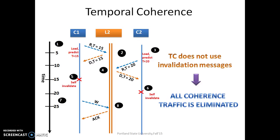This slide demonstrates how temporal coherence handles invalidation. C1 (cache 1) issues a load request to the L2 cache and predicts that the read-only epoch for this address will end at time t=15. The L2 receives C1's load request and epoch lifetime prediction, records it, and replies with the data and timestamp t=15. This timestamp indicates to C1 that it must self-invalidate this address in its private cache by t=15. When C2 issues a load request, it predicts the epoch to end at t=20. The L2 receives C2's request, checks the stored timestamp, extends it to t=20, and replies with the data and timestamp t=20.